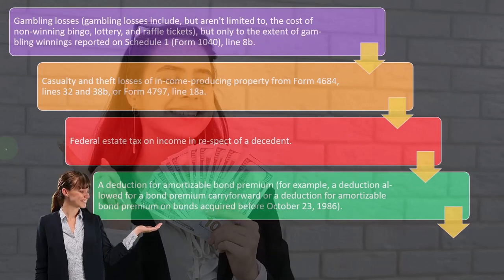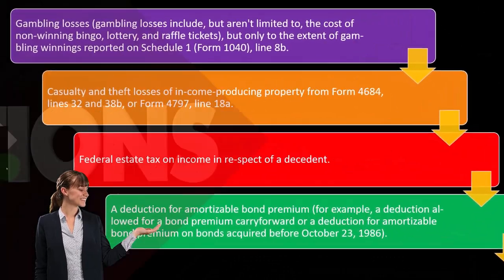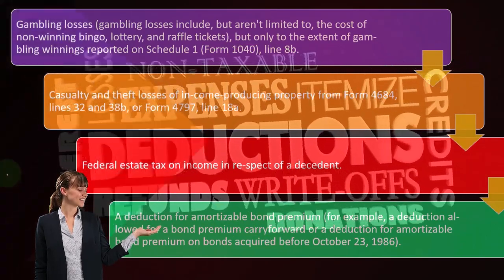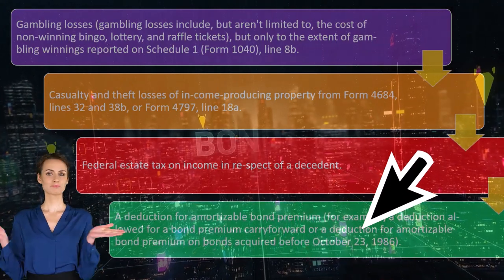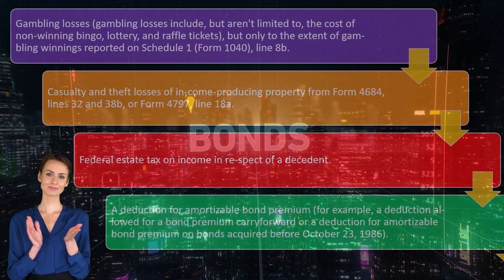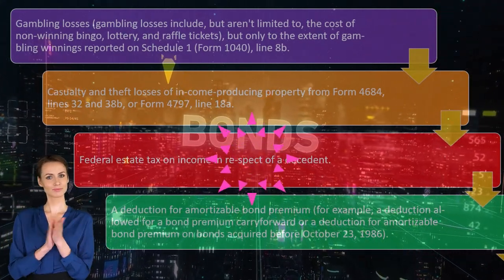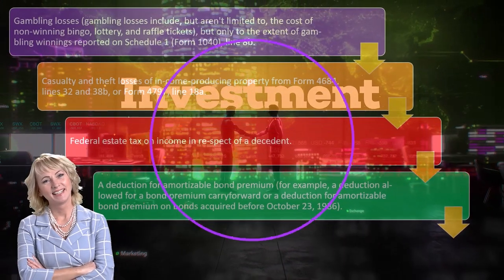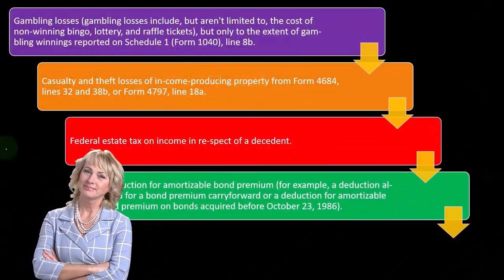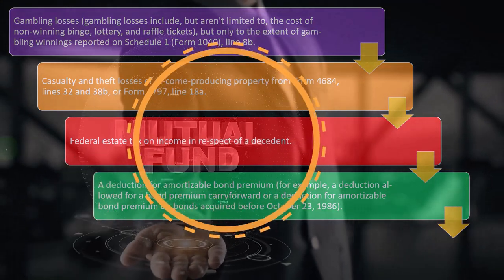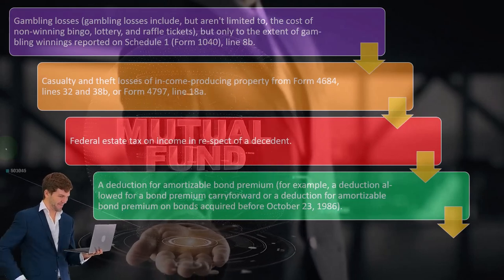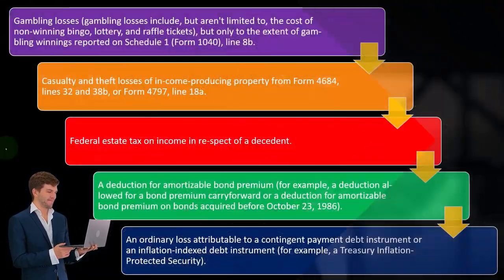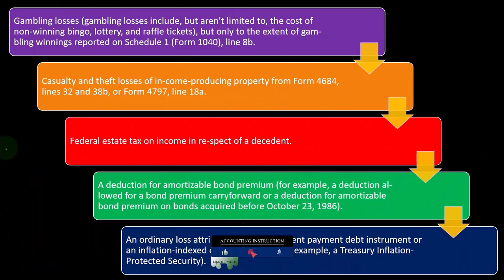A deduction for amortizable bond premiums — for example, a deduction allowed for a bond premium carryover or a deduction for amortizable bond premium on bonds acquired before October 23rd, 1986. When people deal with bonds, normal investors might not be buying actual bonds directly but may have exposure through bond mutual funds. Those mutual funds might be under the umbrella of a retirement plan like an IRA or 401(k), making it less likely to encounter this situation unless investing directly into bonds.